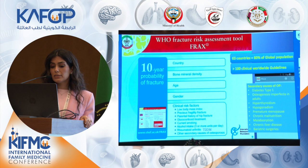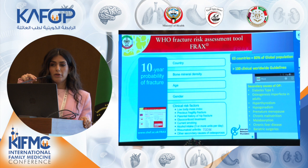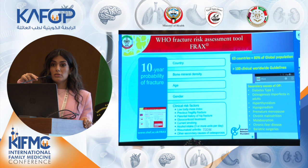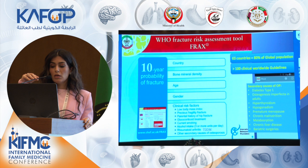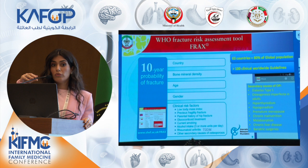The FRAX tool takes into consideration the age of the patient, gender, bone mineral density, past history of fragility fracture, parental hip fracture, use of corticosteroid treatment, whether the patient is a current smoker or has alcohol consumption, if the patient is diagnosed with rheumatoid arthritis or risk-equivalent diabetes type 2, and other secondary risk factors such as diabetes type 1, premature menopause, and bariatric surgeries — all of which increase the risk of bone fracture by affecting bone density.